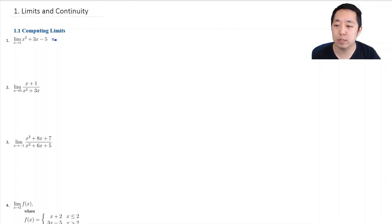So for one like this, I'm just going to plug in 1 into here. I'm going to do 1 squared plus 3 times 1 minus 5. And that's 1 plus 3, that's 4. 4 minus 5 is negative 1.